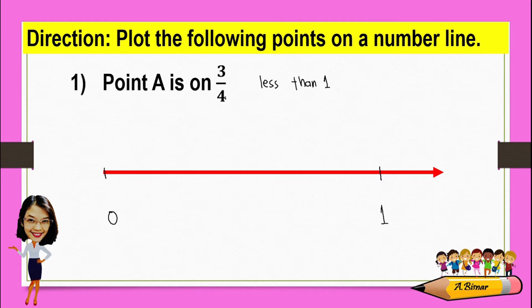Since the denominator is four, we will divide zero to one into four. After we divide this by four, we need to consider the numerator, which is three, which means it is three out of four. So this portion is one-fourth, two-fourths, three-fourths, and four-fourths.